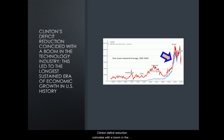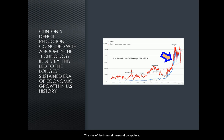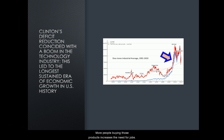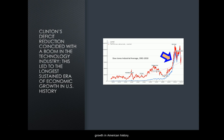Clinton's deficit reduction coincides with a boom in the technology industry. The reason for the surplus is more a combination of Clinton's policies and a rise in technology. This is the 1990s — we get the rise of the internet, personal computers, gaming machines, and all kinds of other things. The rise in that technology means more people want to buy that stuff, which increases the need for jobs, puts more money into the economy, and this leads to the longest sustained era of economic growth in American history.